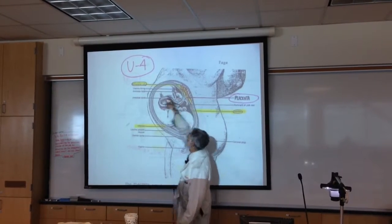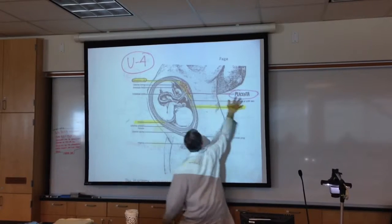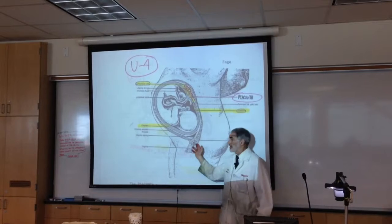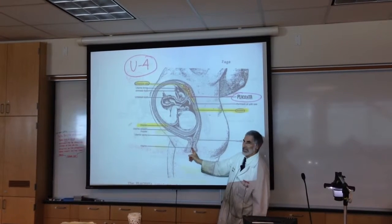Here's the chorionic villi right here. It says that. This is the placenta area. And incidentally, this is the uterus or womb. And this is the vagina or vaginal canal.